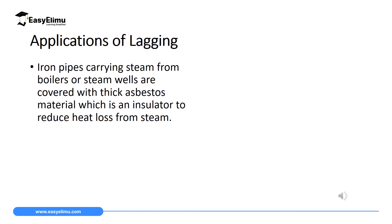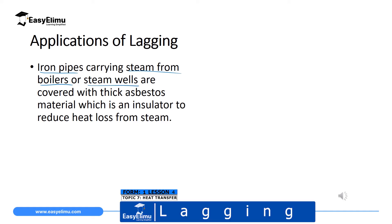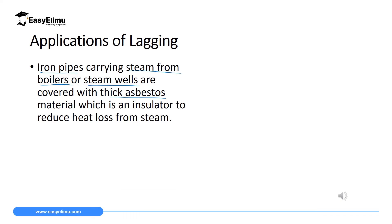One application of lagging — covering a good conductor of heat to prevent it from losing heat — is applied in iron pipes. Iron pipes are used to carry steam from steam boilers or steam wells. Iron, which is a good conductor of heat, carries steam which is very hot, and is covered using thick asbestos materials. Asbestos is an insulator which reduces heat loss from the steam. We want the steam to reach its destination while still in a gaseous state, so we cover the iron pipes with asbestos to prevent heat from being conducted out.